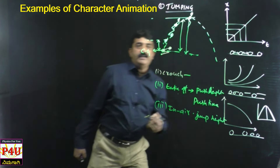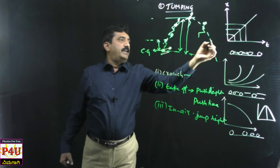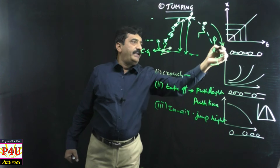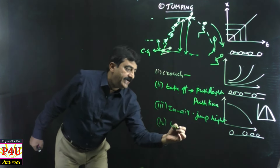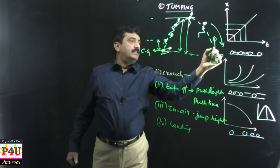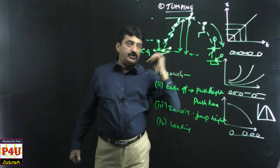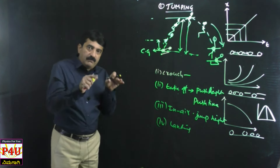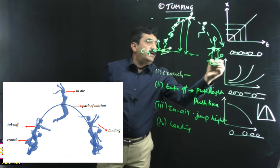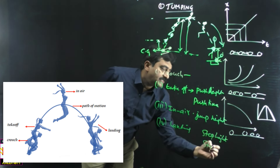The character comes down and proceeds toward landing. Landing is the opposite of take-off. Just before landing, her body is in an upright position, and once she comes back she will be in the crouch position again. This is called the stop height, and whatever time she takes for that is called stop time.